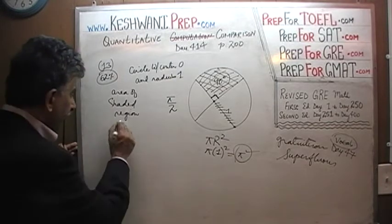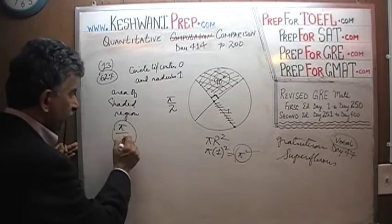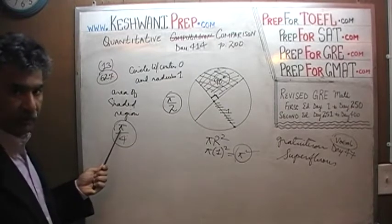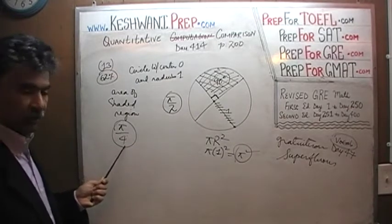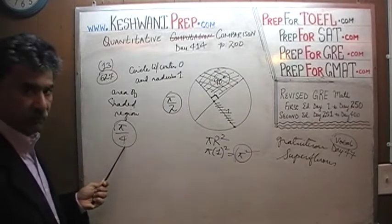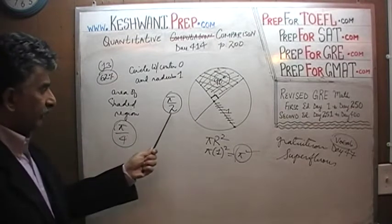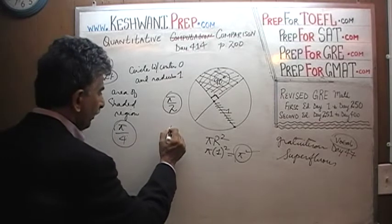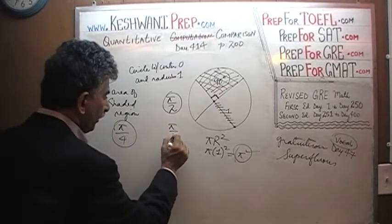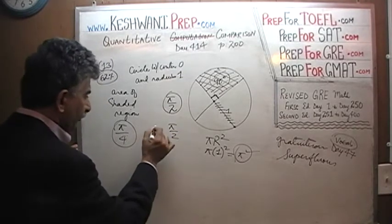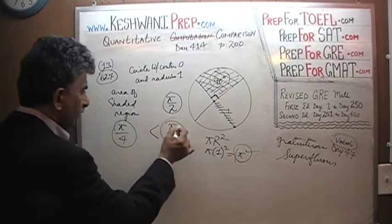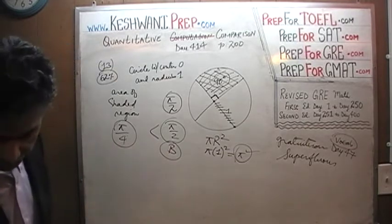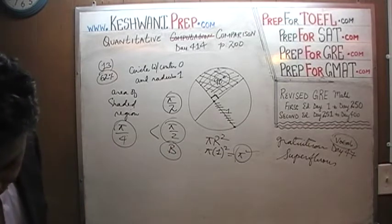We are being asked to compare pi over 4 versus pi over 2. Here we have pi being divided into 4 parts; there it's divided into 2 parts. Obviously pi over 4 is going to be less than pi over 2. The answer is B. That's how simple it is.